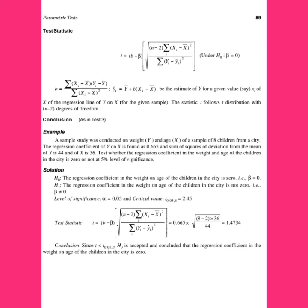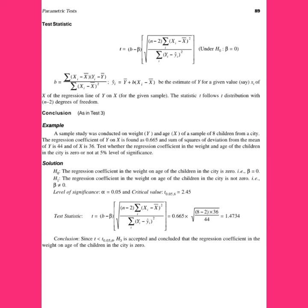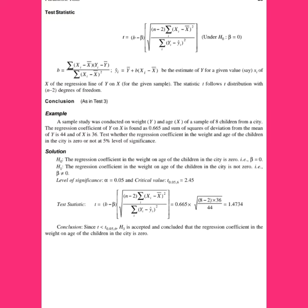Test whether the regression coefficient of weight on age of children in the city is zero or not, at the 5% level of significance. The null hypothesis states that the regression coefficient of weight on age of children in the city is zero — meaning no regression, no minimum relationship. The alternative hypothesis states that the regression coefficient is not zero. The level of significance is 0.05.